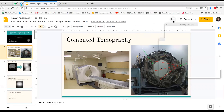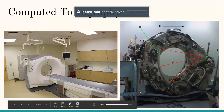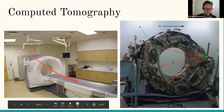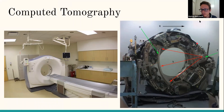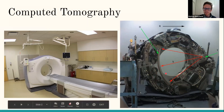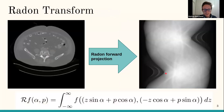Computed tomography is used in medical imaging. The machine used for CT is depicted here on the left. It works by having an x-ray emitter and x-ray detectors on the other side. X-rays are emitted and go through the patient's body, captured by the detector, and the whole structure rotates to take measurements from different angles. This allows reconstruction of the interior of the body.